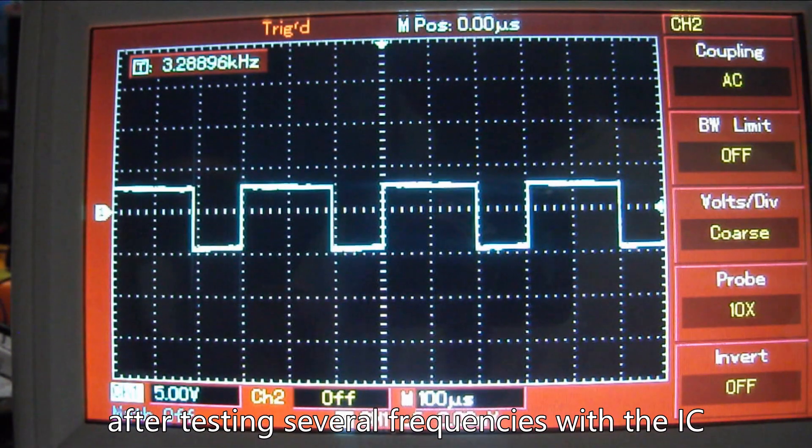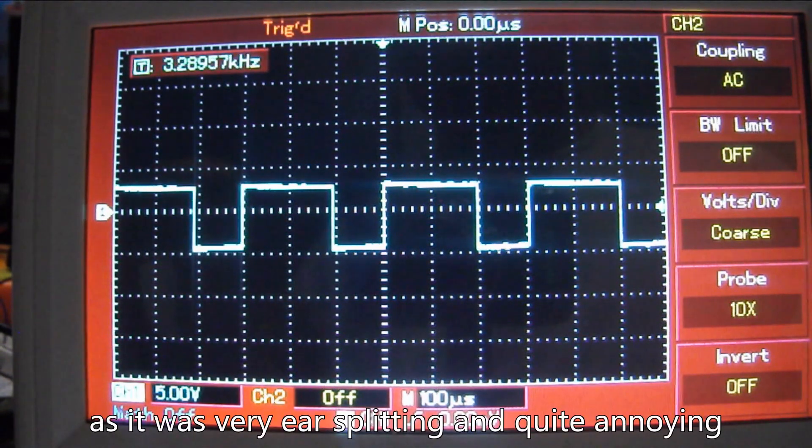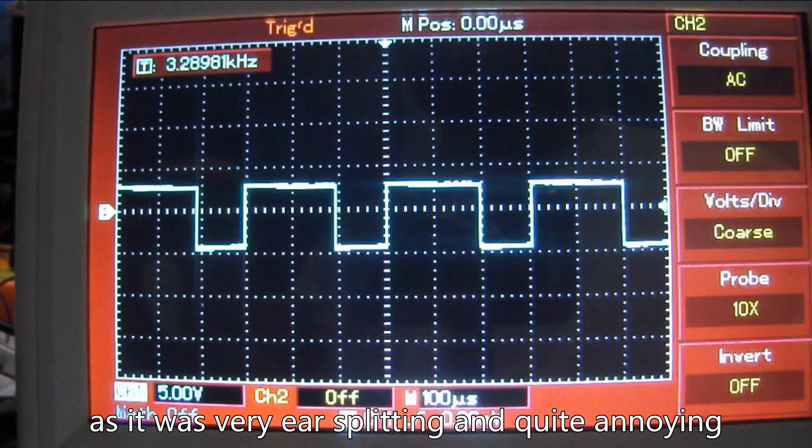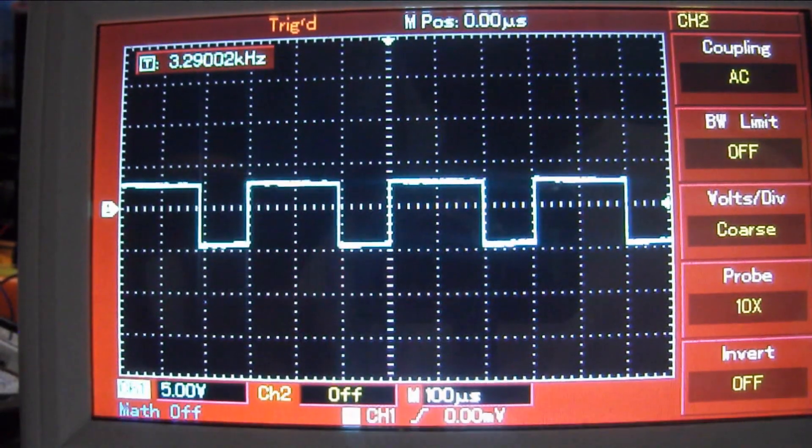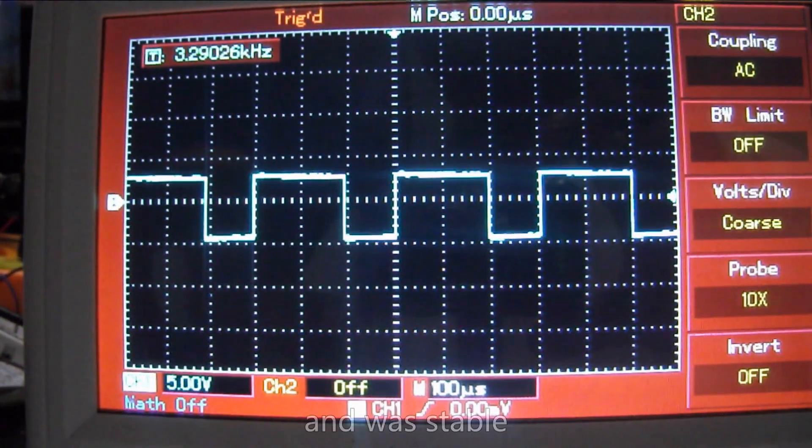After testing several frequencies with the IC I settled on about 3.3 kHz as it was very ear splitting and quite annoying. The wave produced by the 555 was good as always and was stable.